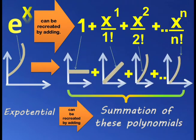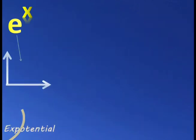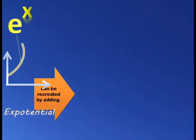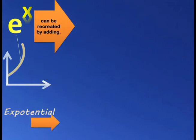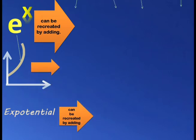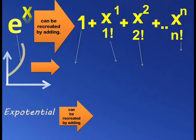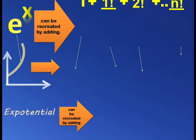If you add 1 plus x raised to 1 upon 1 factorial plus x raised to 2 upon 2 factorial plus x raised to 3 upon 3 factorial, all the way up to x raised to n upon n factorial, any number from small to big, you can recreate the same effect of e raised to x.